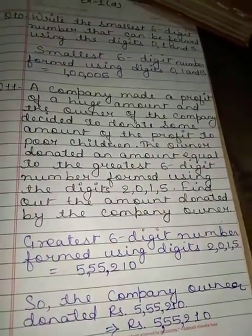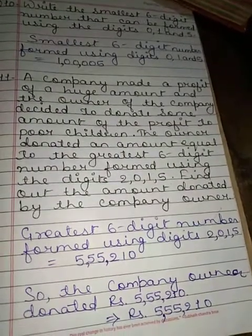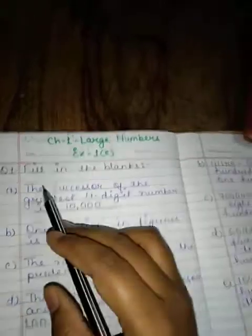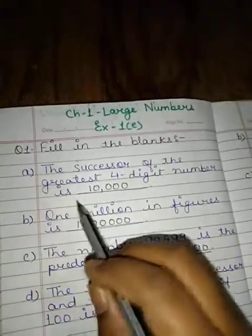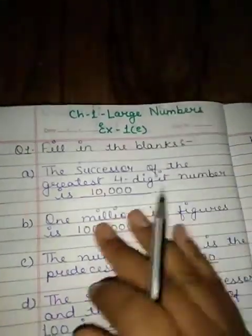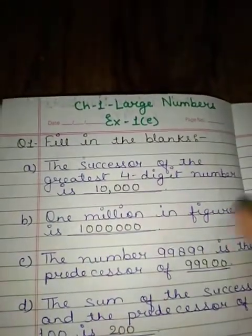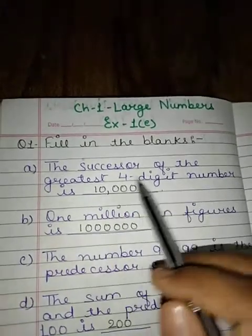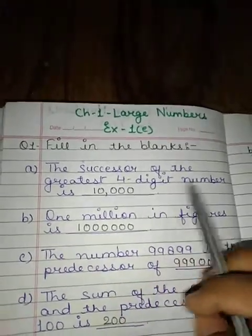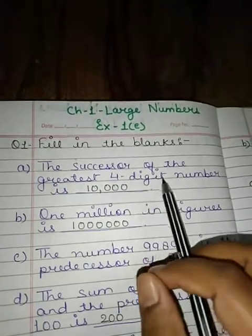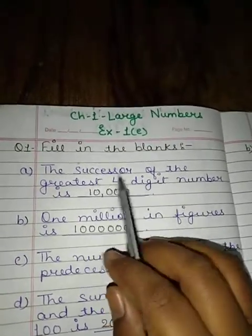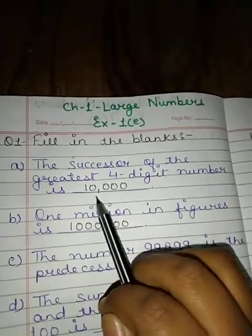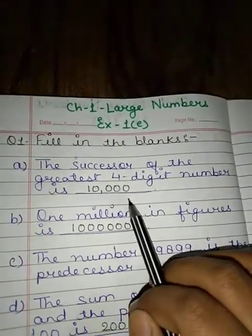Clear? Now we will move to Exercise 1E. First question is fill in the blanks. First question: the successor of the greatest 4-digit number is 10,000. Jab ham greatest 4-digit number banaate hai, toh greatest 4-digit number kya hota hai? 9,999. Successor means when we add 1 to 9,999, it will become 10,000.